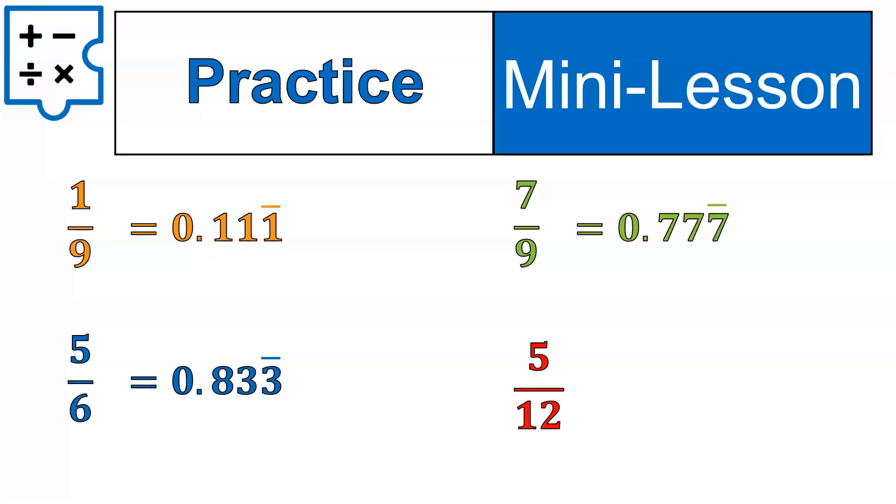And the last one on this slide, 5 twelfths, go ahead and plug that one in, and then we'll get to some kind of funky examples. This one here is a little bit different because it does have two numbers at the beginning that will not repeat. The 4, 1, don't repeat. So 4, 1, 6, and then it's the 6 that repeats forever.